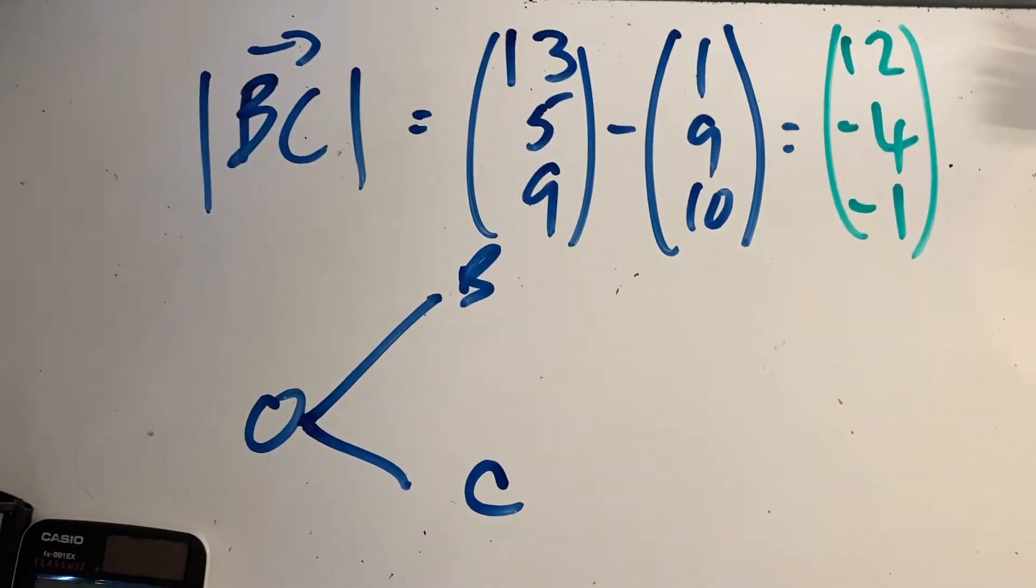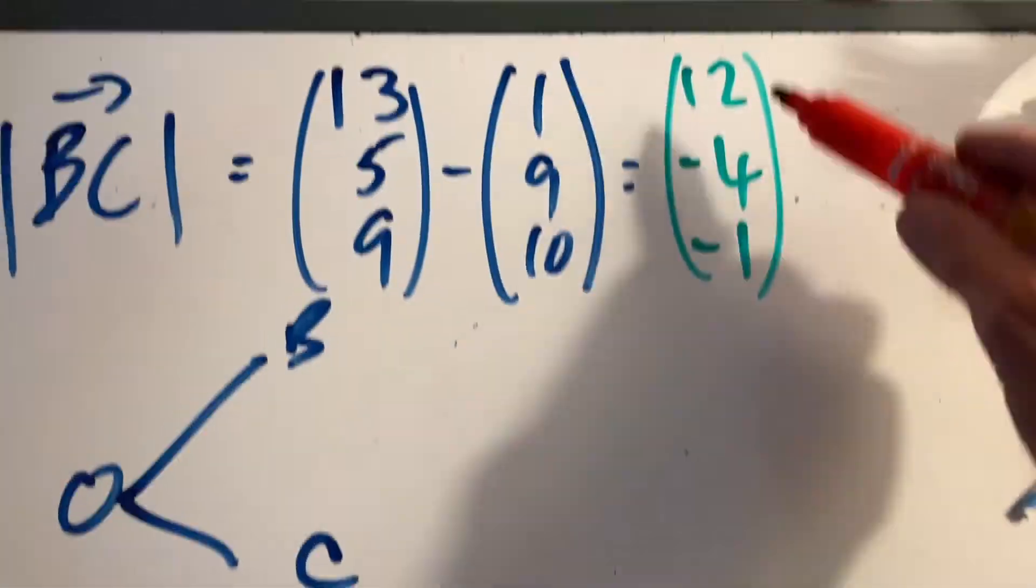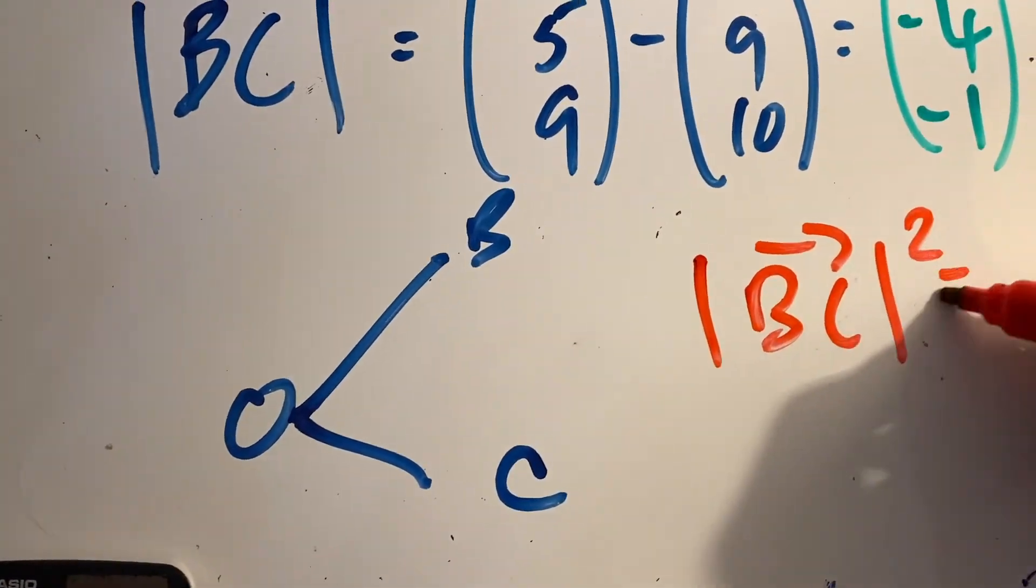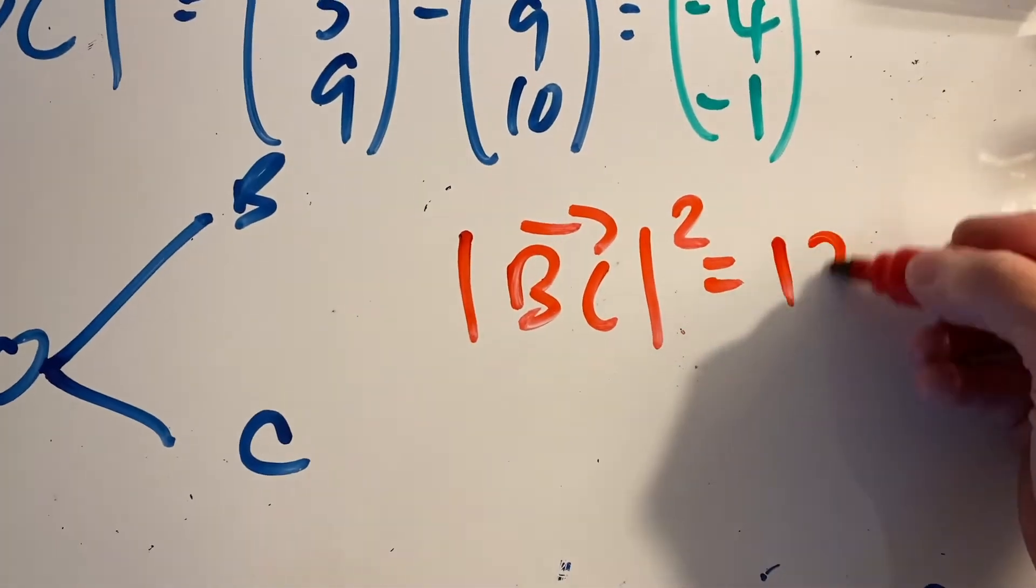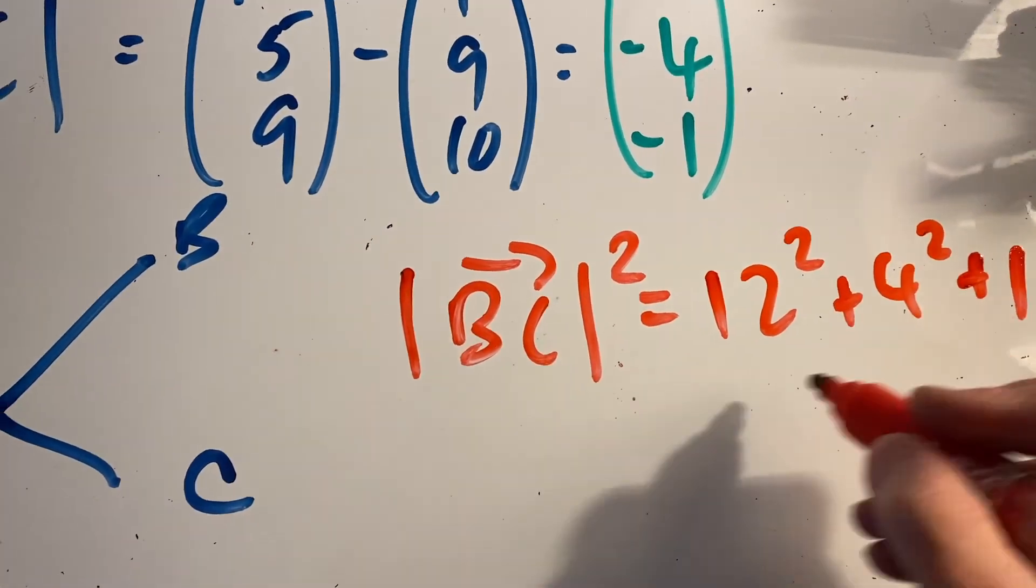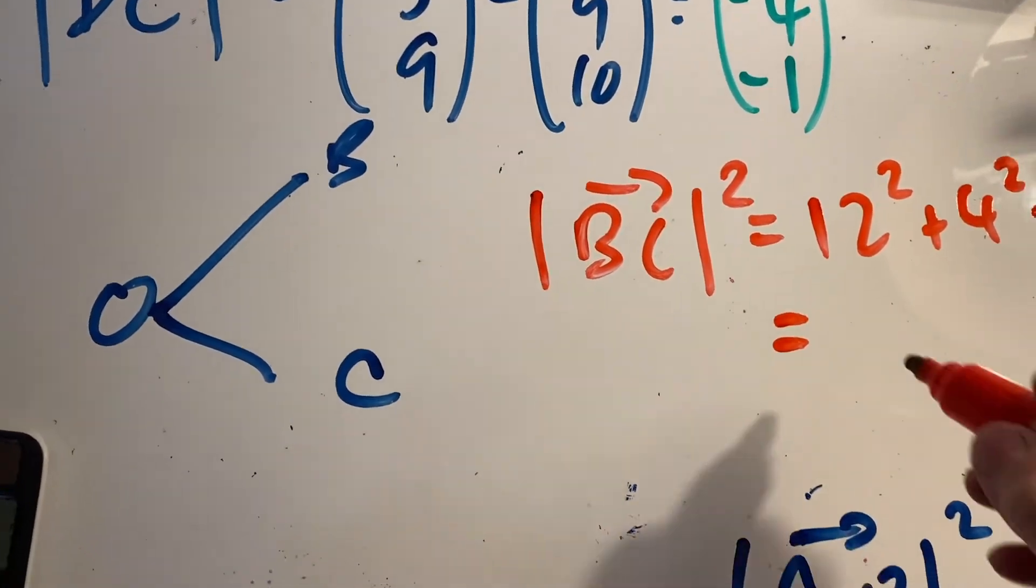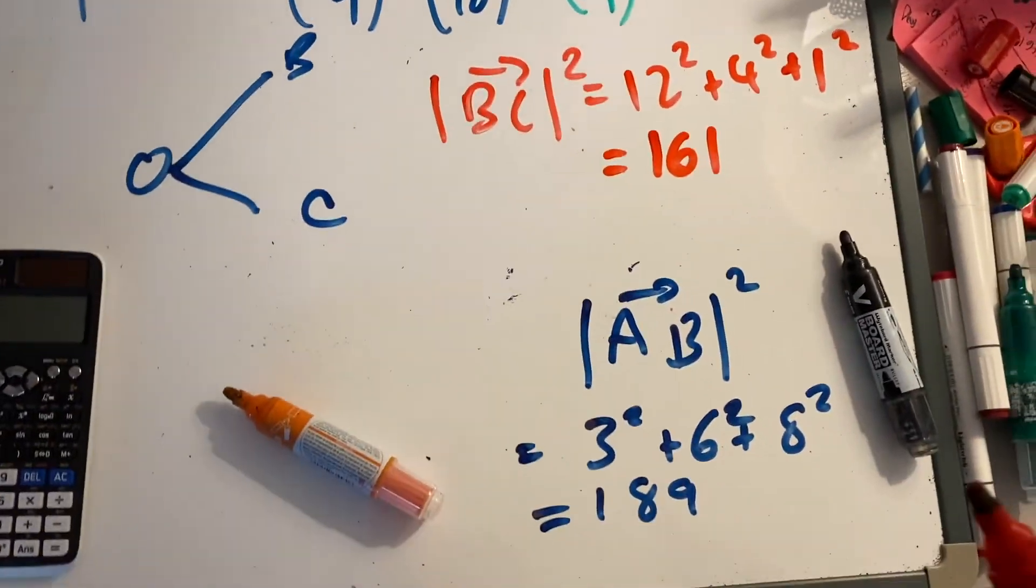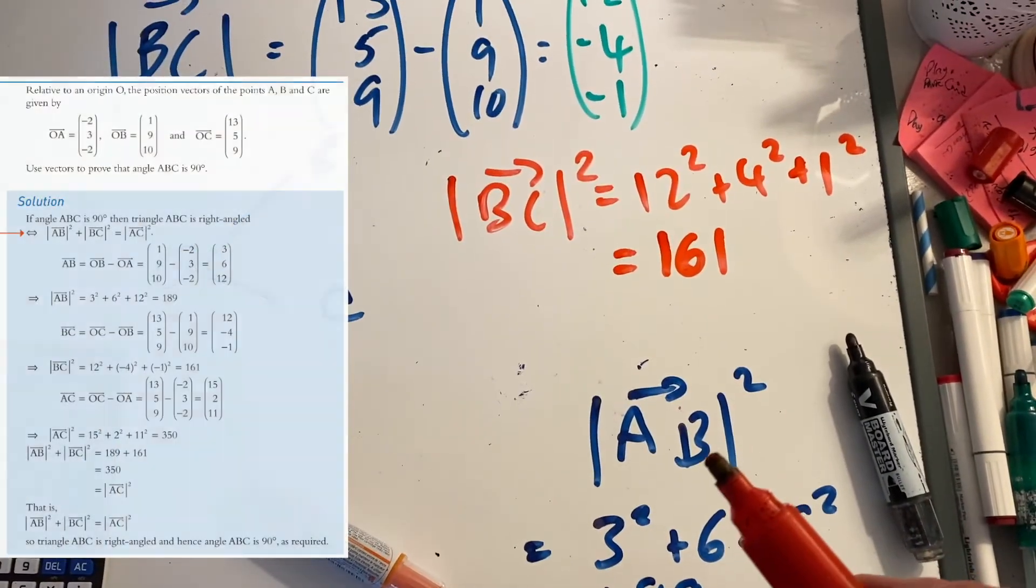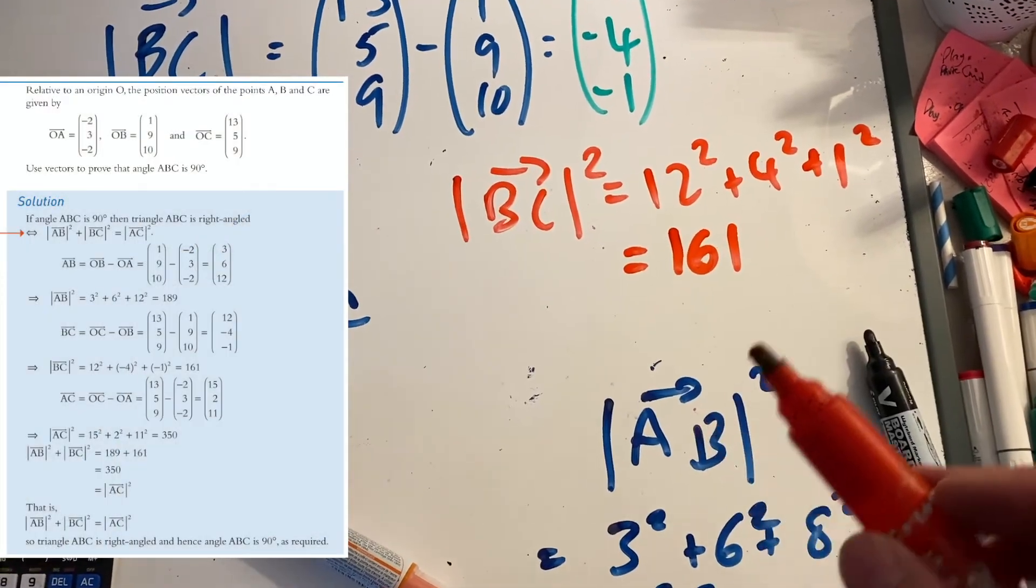I'm just going to work out the magnitude of that. Just like I did before, I'm going to basically square all these ones. The magnitude squared is going to be 12² + 4² (because a negative squared) + 1². If I did that, I get 161. So now I've got my BC squared. I've got my AB, so if I can work out my AC and if that's the sum of these two, then it's a right-angle triangle.